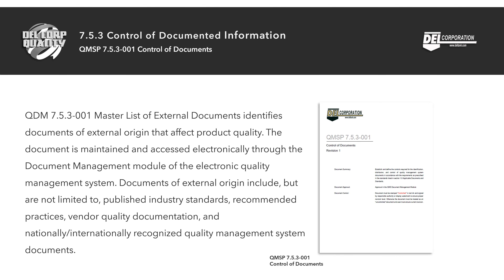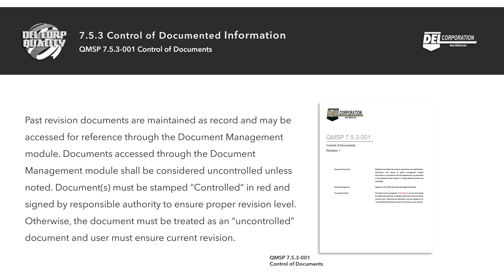QDM 7.5.3-001 Master List of External Documents identifies documents of external origin that affect product quality. The document is maintained and accessed electronically through the document management module of the electronic quality management system. Documents of external origin include but are not limited to published industry standards, recommended practices, vendor quality documentation, and nationally and internationally recognized quality management system documents.